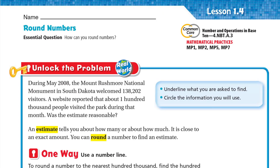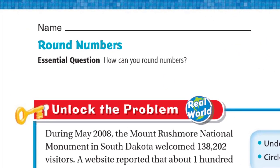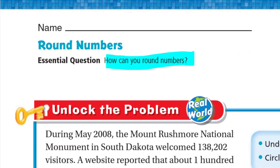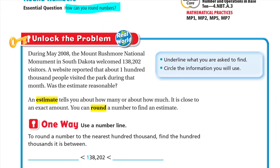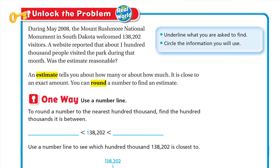Hello, this is Mr. Ahmed and today we'll do lesson 1.4: Round Numbers. Our essential question is how can you round numbers? Let's unlock the problem. During May 2008, the Mount Rushmore National Monument in South Dakota welcomed 138,202 visitors. A website reported that about 100,000 people visited the park during that month. Was the estimate reasonable?